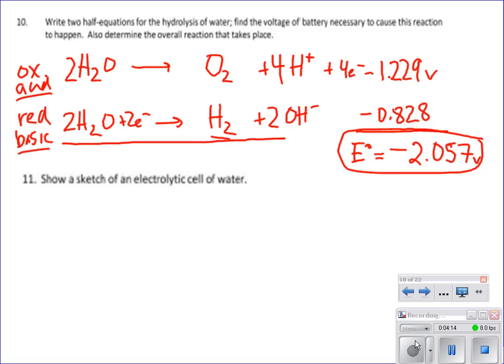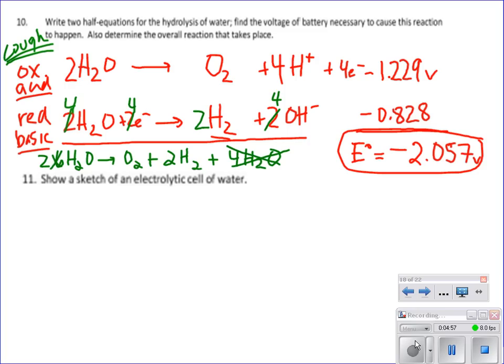So the last thing we need to do is add this up to get our overall equation. You might want to know how to do this. So multiply the bottom by 2. So we get a 4 here, a 4 here, a 2 here, and a 4 here. When we add these up, we get 6 waters. The electrons cancel. We get an O2 plus 2 H2s. What does 4 Hs and 4 OHs make? Plus 4 waters. So we could clean house, leaving us with 2 waters. And that is the equation, the overall equation representing the electrolysis of water.